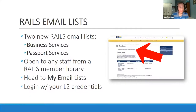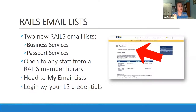I would highly suggest signing up for the passport list if you attended the online roundtable we did two weeks ago with Kim Murphy — that one was great. If you haven't seen it, you can watch it from the Rails YouTube page. The business services list is exciting too because we have a networking group that's agreed to help drive conversation on it.